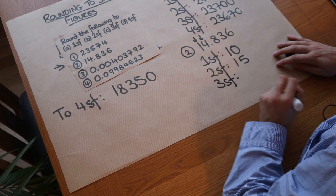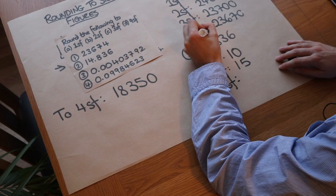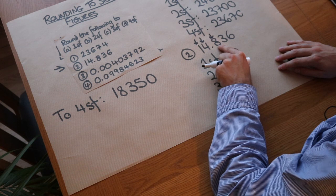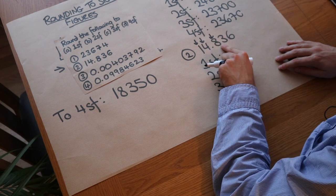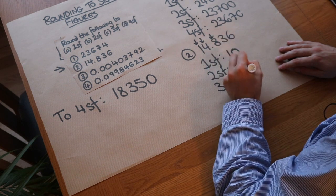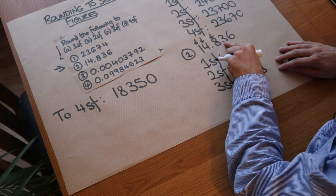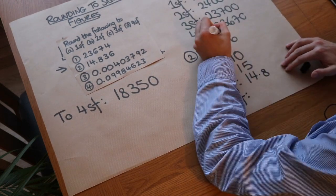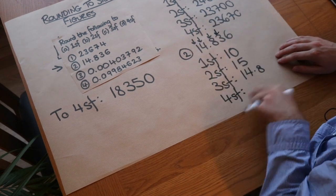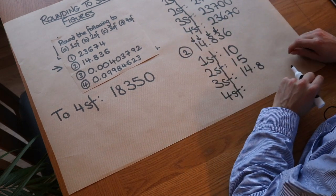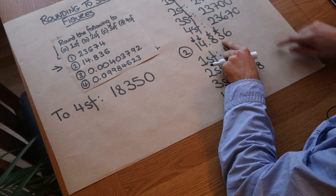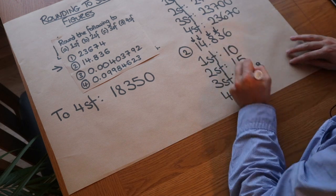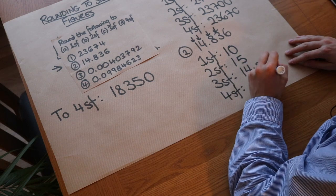For three significant figures, we keep up to the third digit — this is effectively rounding to one decimal place — and we can see that the 3 is not greater than or equal to five, so it's 14.8. For four significant figures, we keep up to the fourth digit — effectively rounding to two decimal places — and check the next digit. Yes it is greater than or equal to five, so the 3 goes up to 4, giving 14.84.